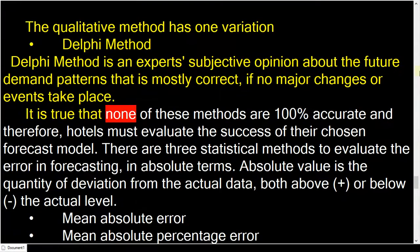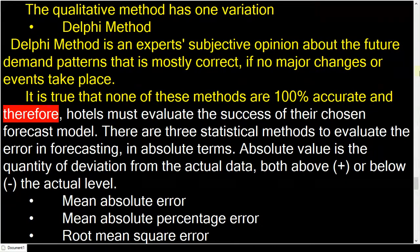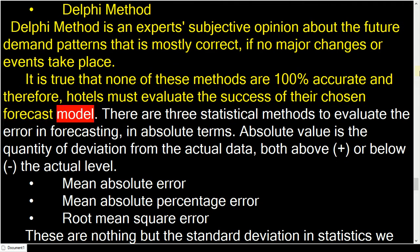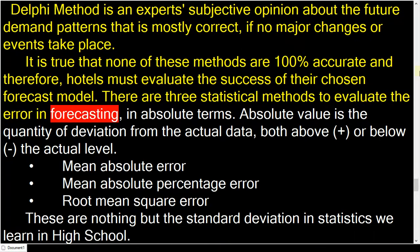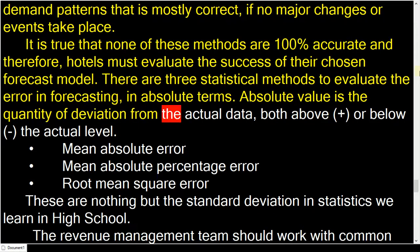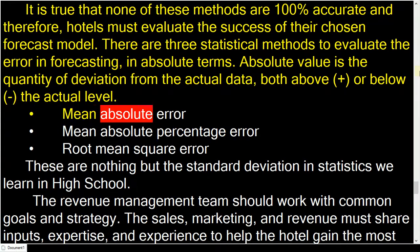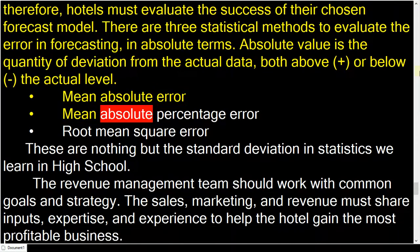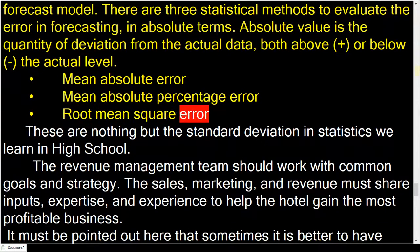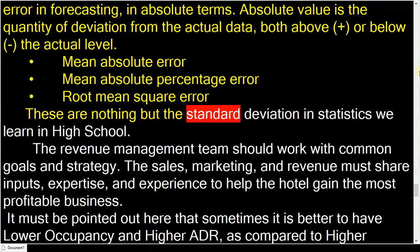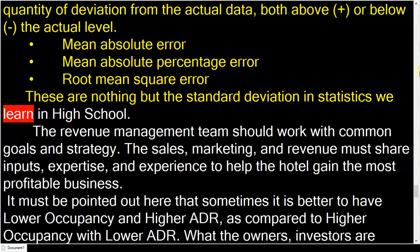It is true that none of these methods are 100% accurate, and therefore hotels must evaluate the success of their chosen forecast model. There are three statistical methods to evaluate the error in forecasting in absolute terms: Mean Absolute Error, Mean Absolute Percentage Error, and Root Mean Square Error. These are essentially the standard deviation measures we learn in high school statistics.